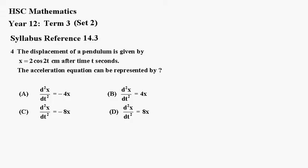Number 4. The displacement of a pendulum is given by x equals 2 cos 2t centimeters after time t seconds. The acceleration equation can be represented by a, b, c or d.